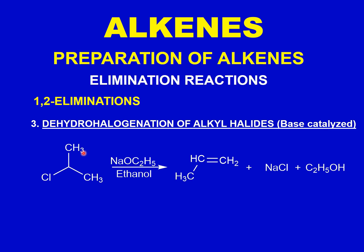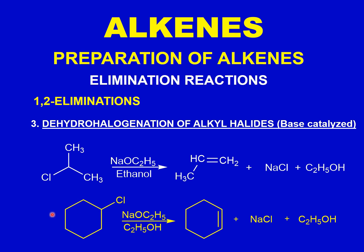The ethoxide ion, upon taking the hydrogen, is converted into ethanol, leaving behind a sodium cation. The sodium cation then combines with the halide anion to form sodium chloride. This is how dehydrohalogenation of alkyl halides takes place under base catalysis. For a cyclic molecule such as a chlorocyclohexane ring, 1,2-elimination similarly occurs in the presence of sodium ethoxide: a hydrogen is removed from an adjacent carbon, forming a carbon-carbon double bond, and the chloride ion is removed, yielding an alkene as the major product along with sodium chloride and ethanol.